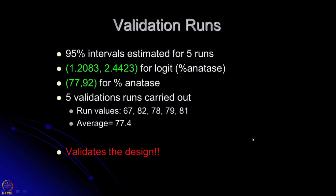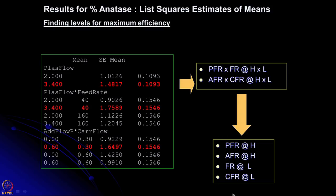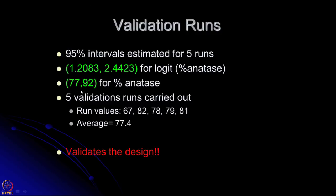With this we perform the validation runs. We find the prediction interval for 5 validation run trials — please recall the calculations from the past, the same applies here. For the logit transformed variable we find the 95 percent prediction interval for 5 runs with this combination of factors. Then reverting back by taking the inverse logit transformation, it falls from 77 to 92 percent — the interval where percentage anatase should fall. The 5 validation trials are carried out and the average is 77.4 percent, which falls within the interval, validating the design.